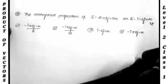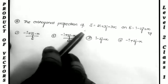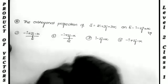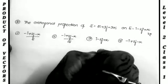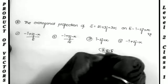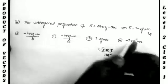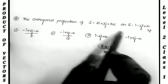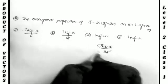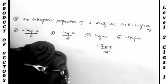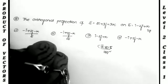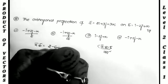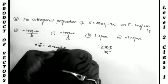Next problem: orthogonal projection of ā on b̄. The formula for orthogonal projection (component along b̄) is a·b · b̄ / |b|². Note: perpendicular to b̄ would require ā minus this, but here there is no 'perpendicular', so we use the direct formula. Computing a·b: i·i + 2j·(−2j) + 3k·k = 1 − 4 − 6 + 3... wait — i·i=1·1, j·j=2·(−2)=−4... result is −1.